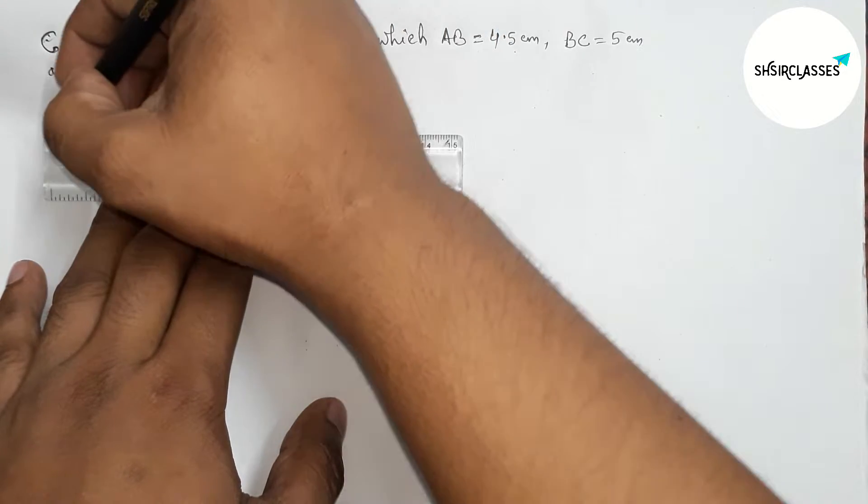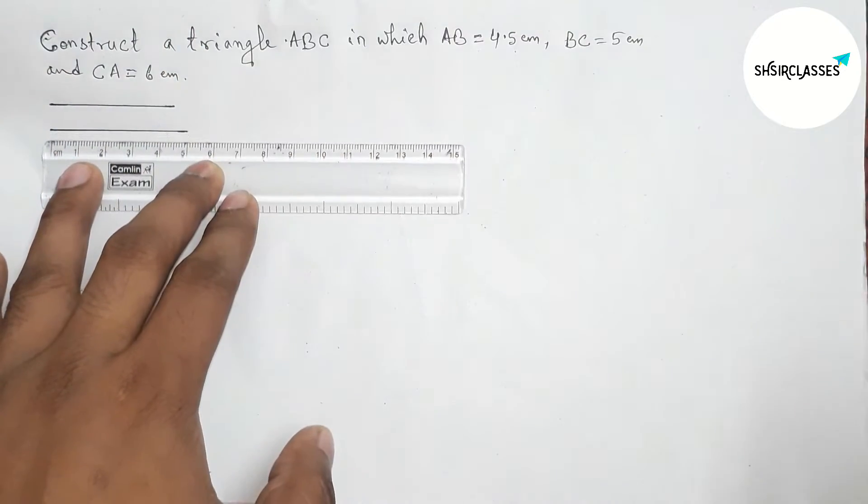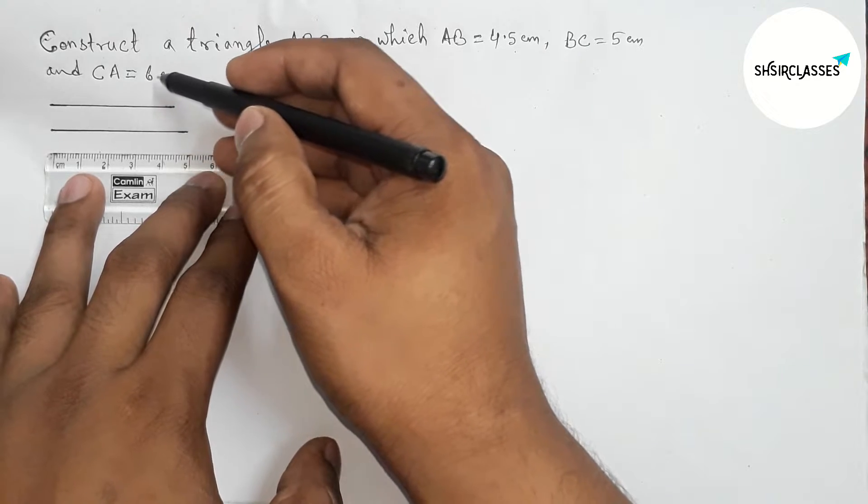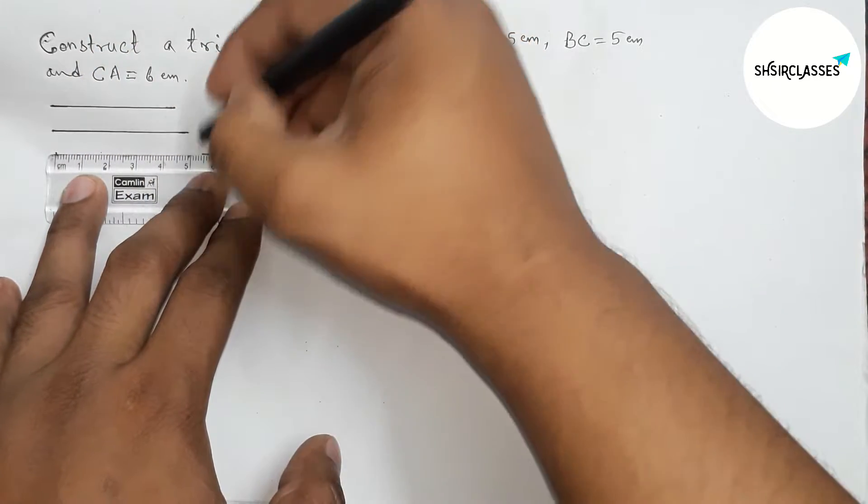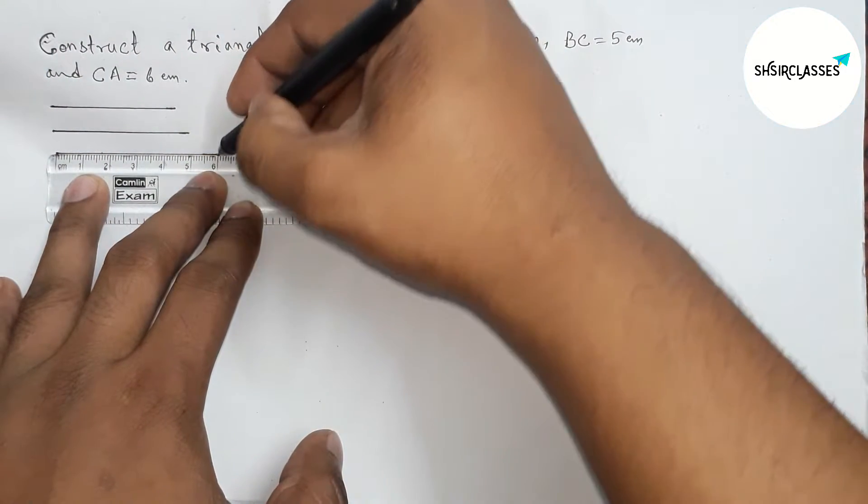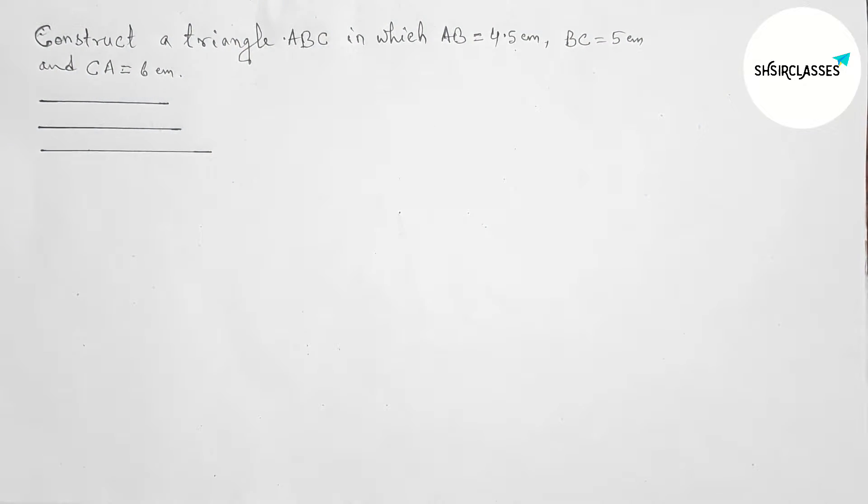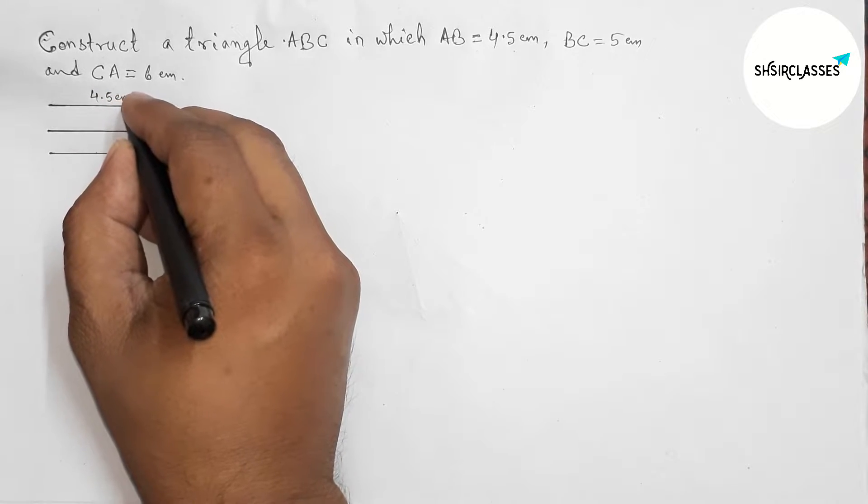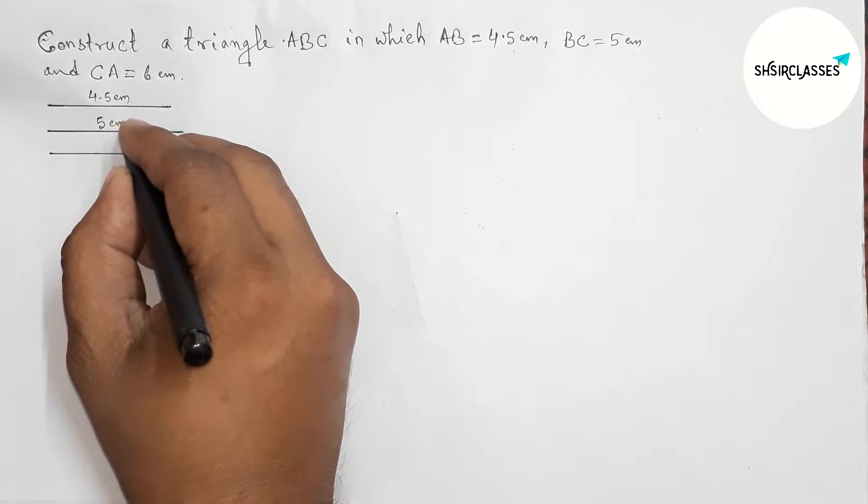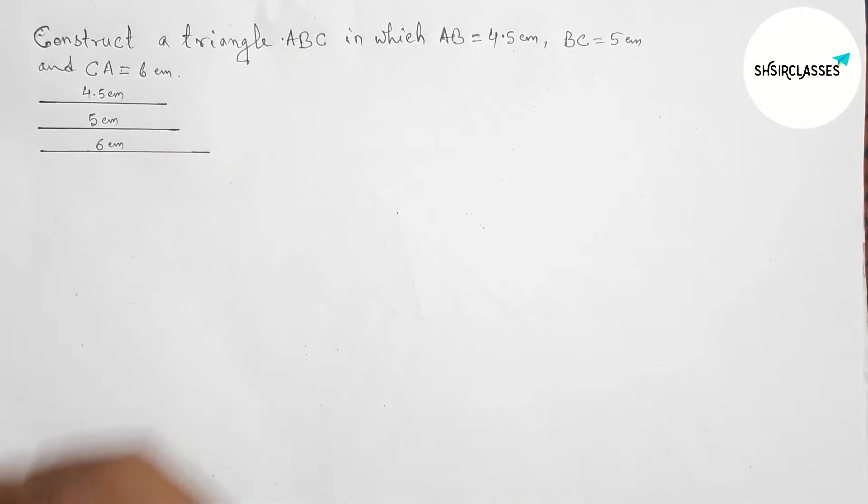So this is the 5 centimeter line segment. And lastly, drawing a line segment of length 6 centimeters by this way. Okay, so here this one is the 4.5 centimeter line segment, this one is 5 centimeters, and this one is 6 centimeters.